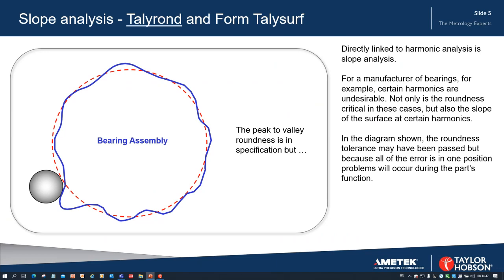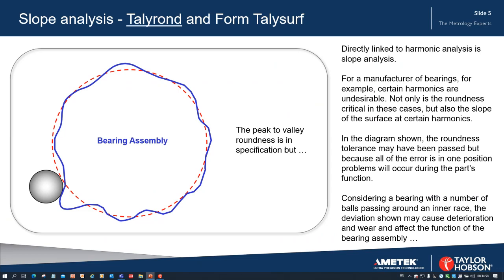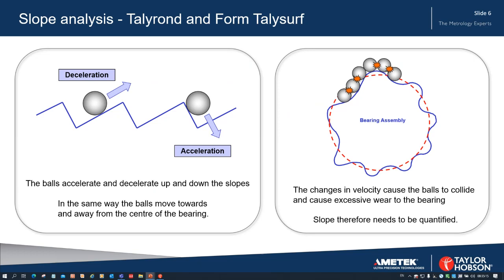Back to the diagram on the left — the roundness tolerance may have been passed as we mentioned, but because all of the error is in one position, problems will occur during the part's function. Considering a bearing with a number of balls passing around an inner race, the deviation shown may cause deterioration and wear and affect the function of the bearing assembly. We can see that the balls move upwards and downwards, with deceleration as the balls move up the slope and acceleration as they move down.